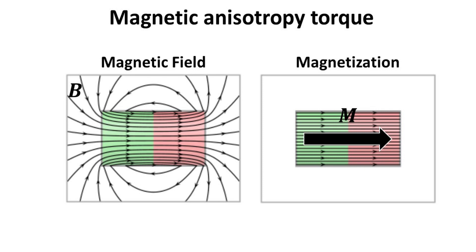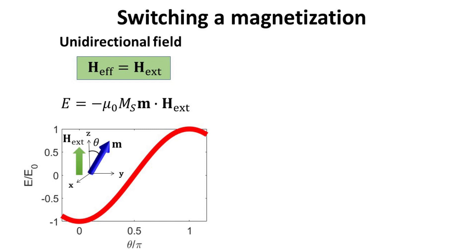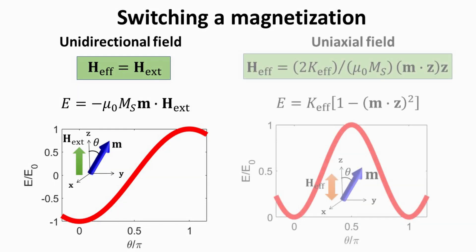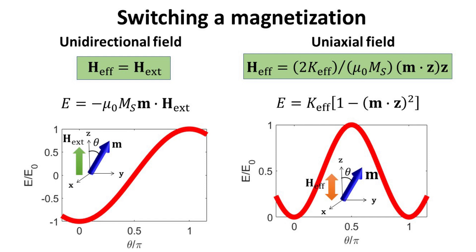The demagnetizing field gives rise to a preferential direction for the magnetization. This preferential direction corresponds to the energy minimum, and any deviations from it will increase the total energy of the magnetization. The torque due to an external field is always unidirectional — it always seeks to drive the magnetization towards theta equal to zero, where the magnetization M is aligned with the external field. On the other hand, the torque due to crystalline magnetic anisotropy is uniaxial. The energy of a magnetic moment subjected to a uniaxial torque increases when the magnetization is driven away from the anisotropy axis, giving at least two minimum energy configurations. The energy minima correspond to theta equals zero and theta equals pi, as shown in the right figure.